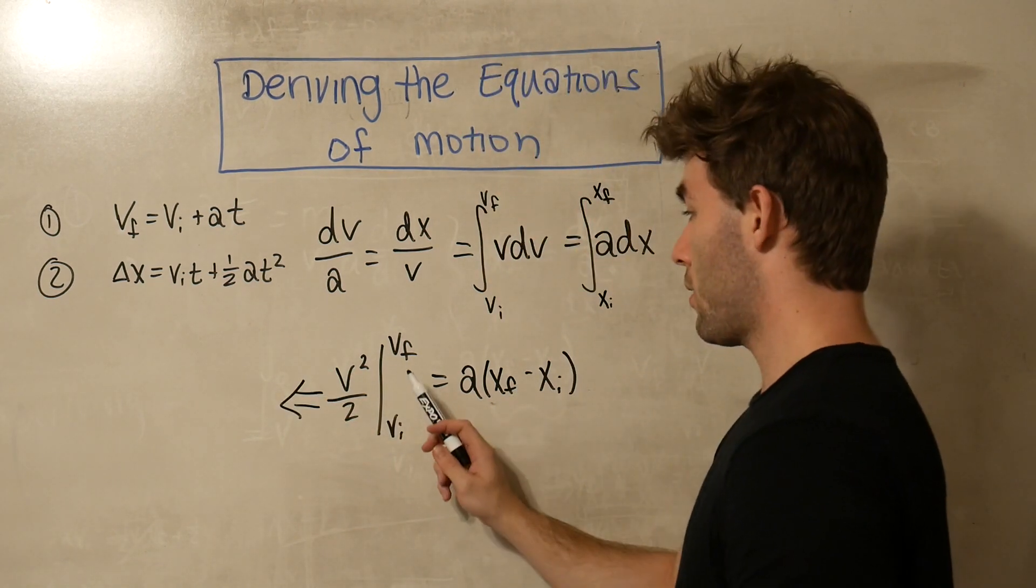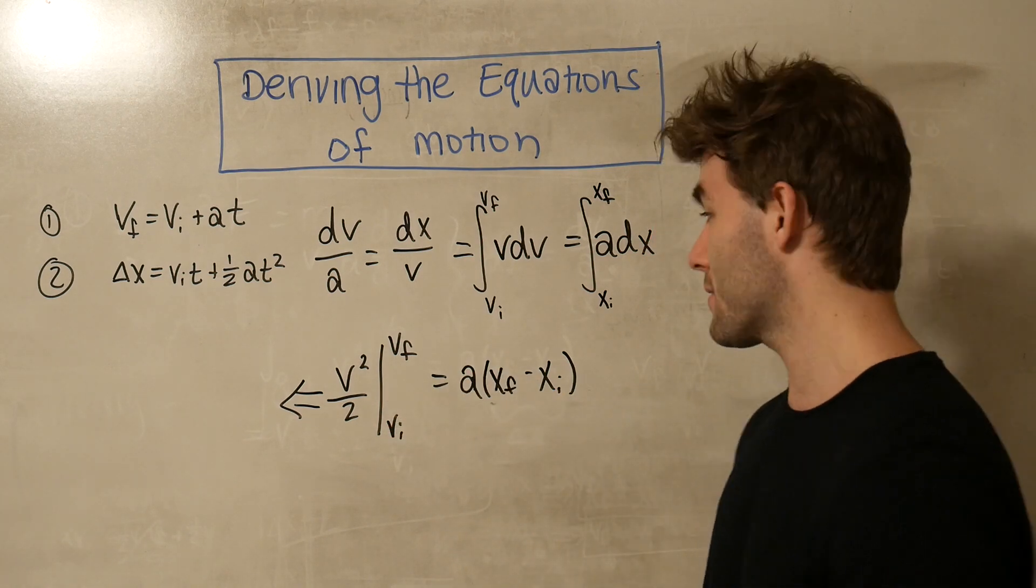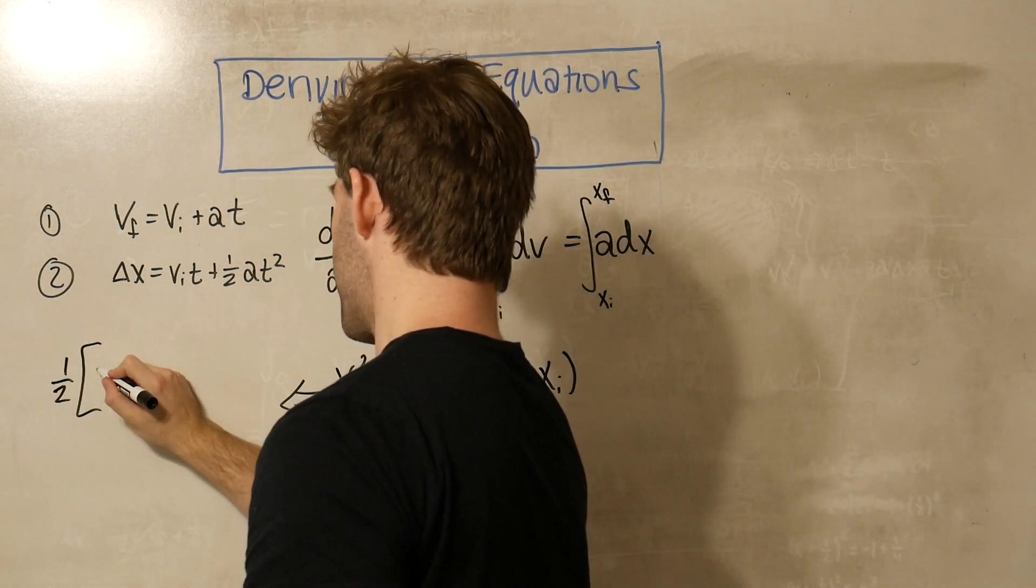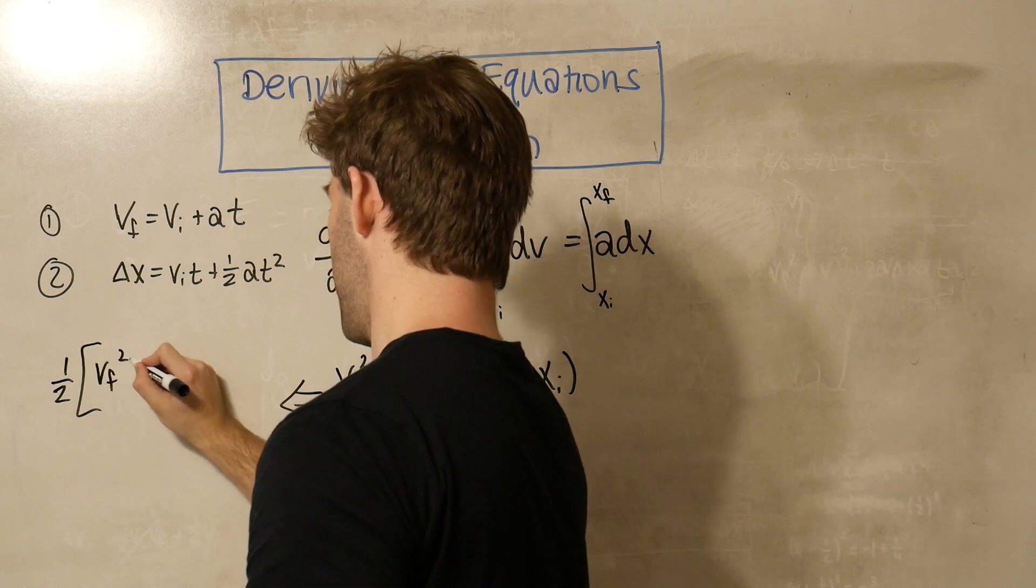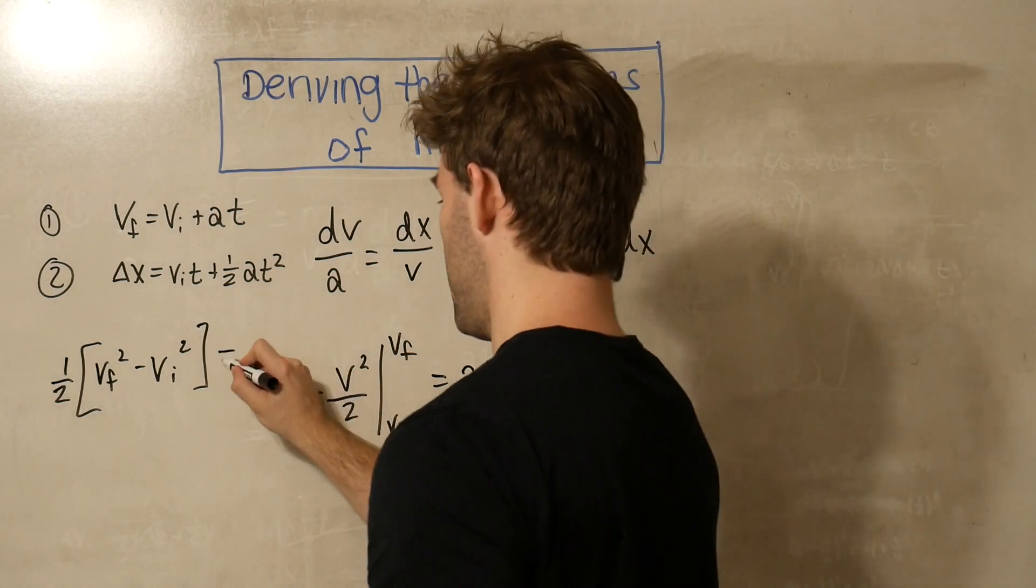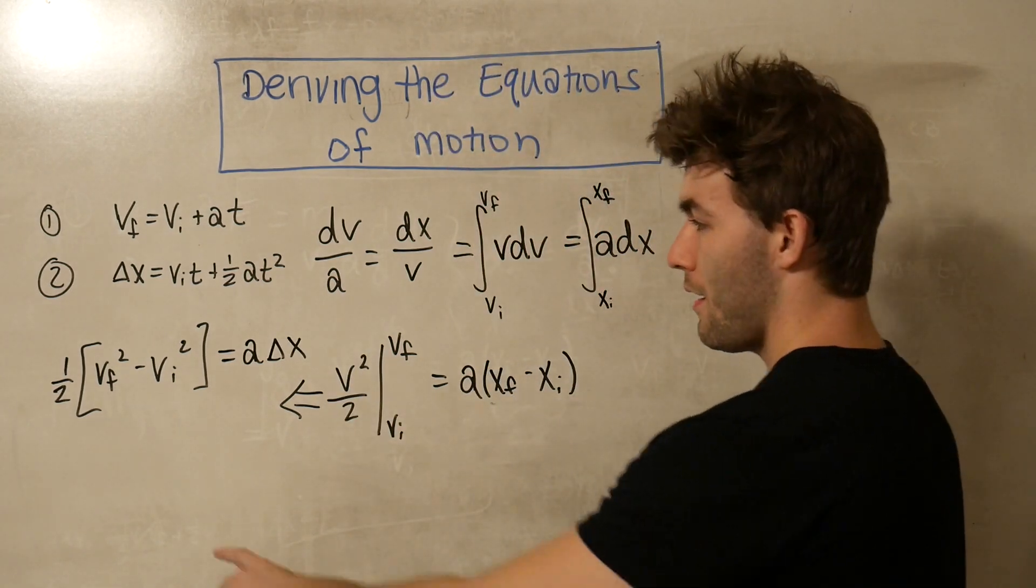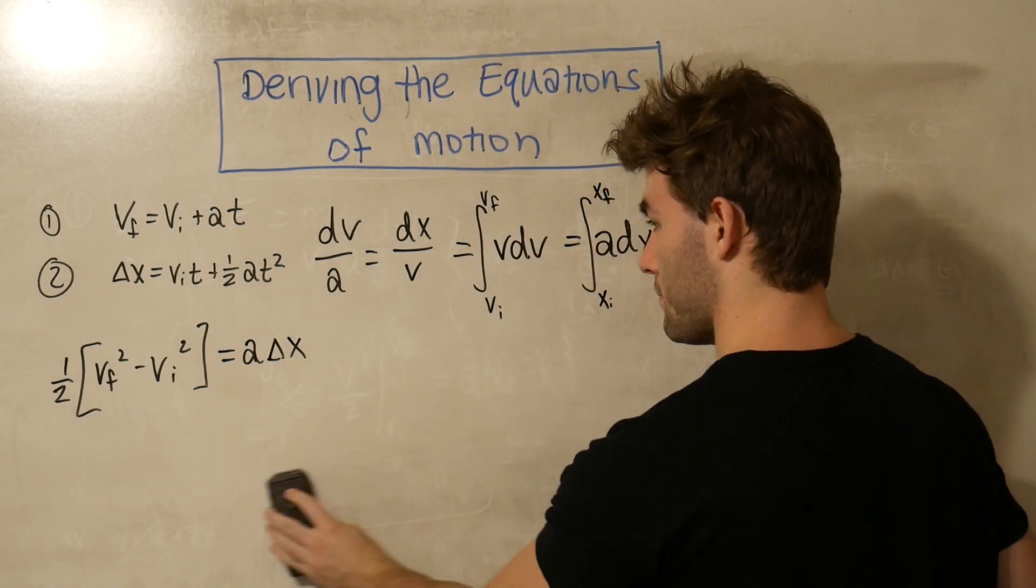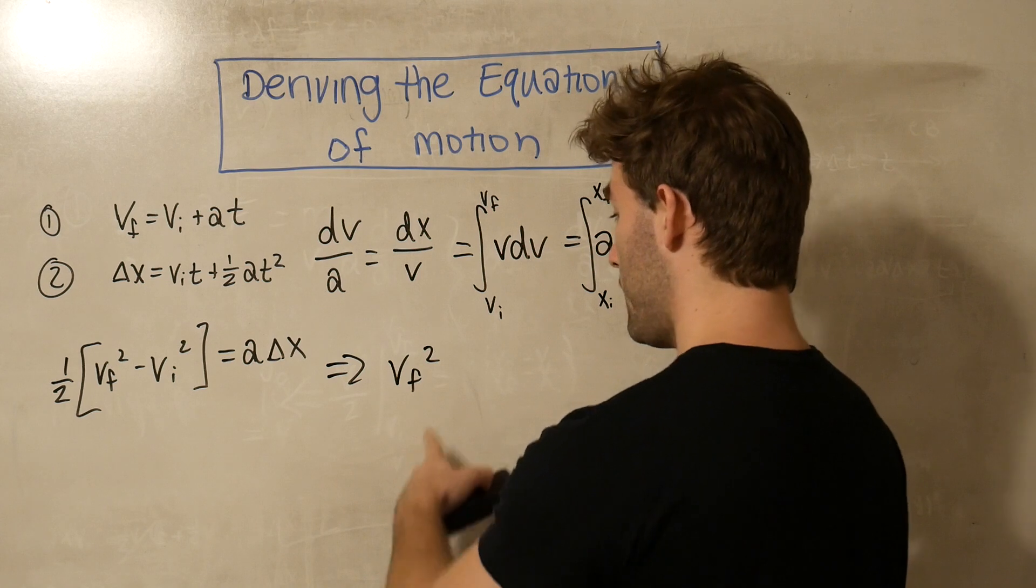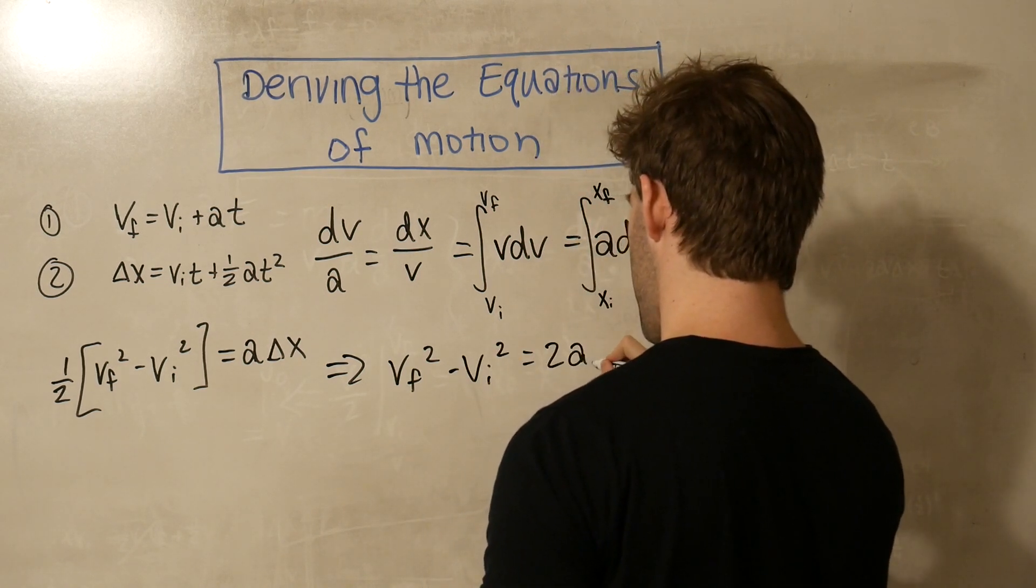Okay, so if we substitute in our limits of integration into our evaluated integral and just call this term delta x, we get 1/2 vf squared minus vi squared is equal to a delta x. Okay? If we just multiply that 2 over, we get vf squared minus vi squared is equal to 2a delta x.